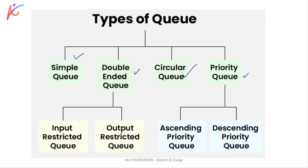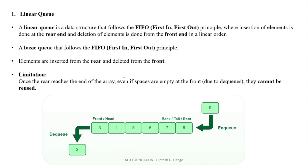ठीक है, आपको concept समझ में आ गया है। Now let's move forward to the linear Queue — इसको हम कहते हैं simple Queue. जो अब तक हमने implementation किया है, समझा है Queue को, वो सारा linear Queue पर ही समझा है। जो अब तक हम पढ़ रहे थे, पिछले वाले में discuss किया — insert in Queue, DQ — वो सारा हमने linear Queue पर focus किया है।